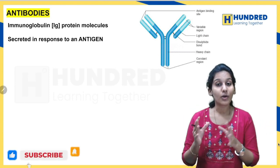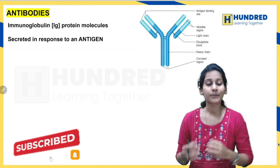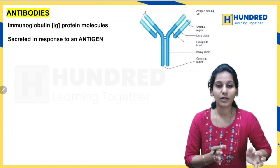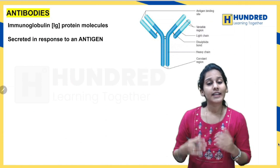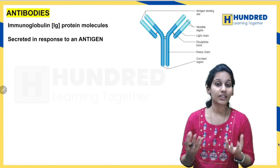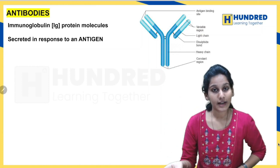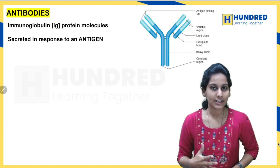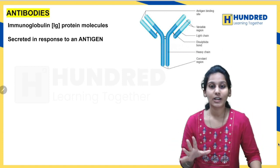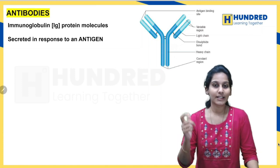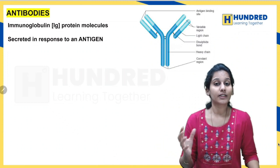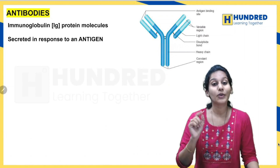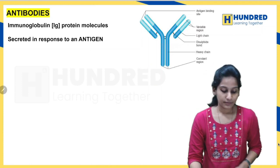First, an antibody is also known as immunoglobulin. It is called immunoglobulin because it is made up of globulin proteins. Now, how do we produce antibodies in our body? Usually there is an antigen — an antigen can be a microorganism, pathogen, bacteria, virus, or other proteins. Our immune system's main feature is differentiating our body's own cells from foreign cells.